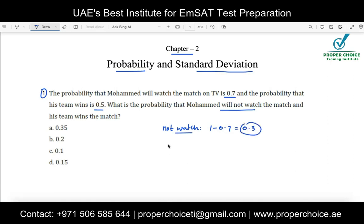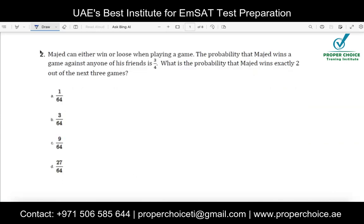Probability of not watching is 0.3, and probability of winning is 0.5. These are independent events — whether the match is won or lost does not depend on Muhammad watching. For independent events, you just multiply the probabilities. So: 0.3 × 0.5 = 0.15. That is option D.